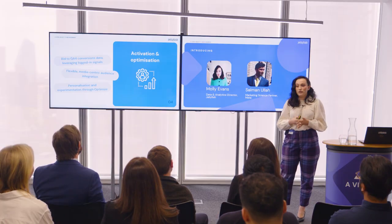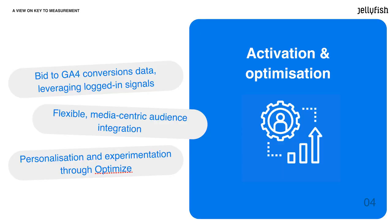Now we come to the big question — what are we going to actually do with this data? We've collected it, played with it, put it in dashboards — how do we use it to be better at our jobs every day? Starting with integration: we've talked about logged-in device space and data-driven attribution. Now think about integrating GA4 directly with your ad tech. If you imagine GA4 as the central foundation of your measurement, bringing all your ad tech and linking it into one place, you can bid directly to conversions within GA4.